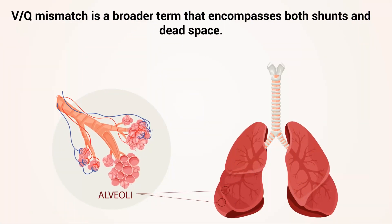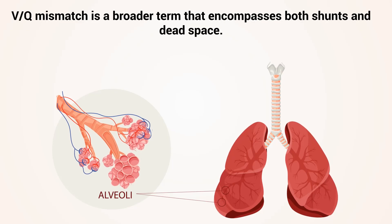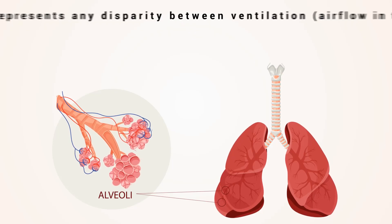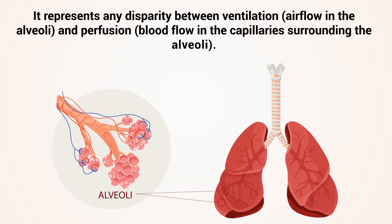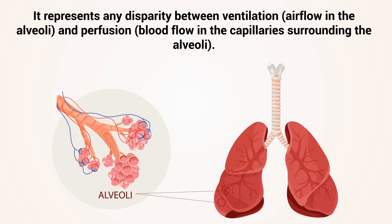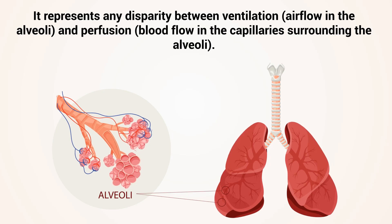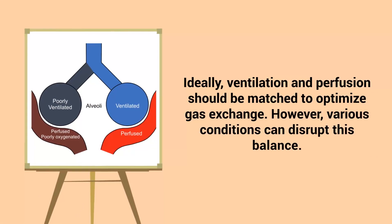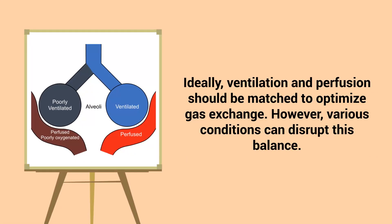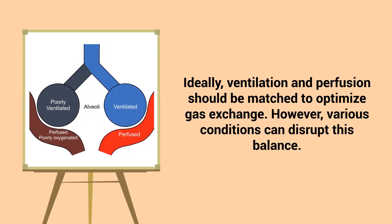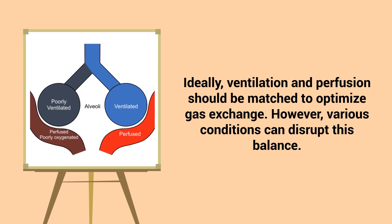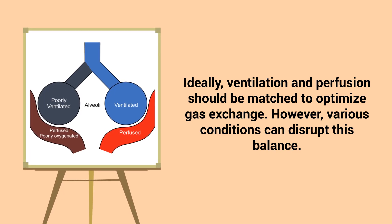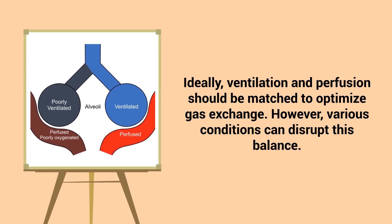VQ mismatch is a broader term that encompasses both shunts and dead space. It represents any disparity between ventilation and perfusion. Ideally, ventilation and perfusion should be matched to optimize gas exchange. However, various conditions can disrupt this balance.